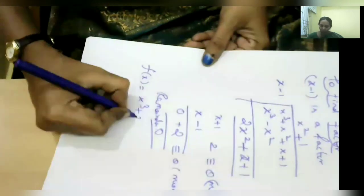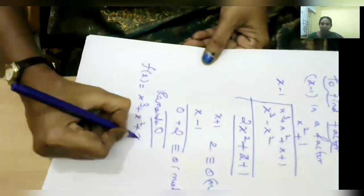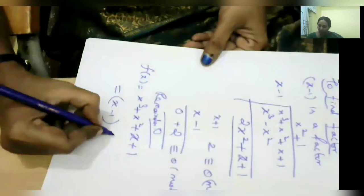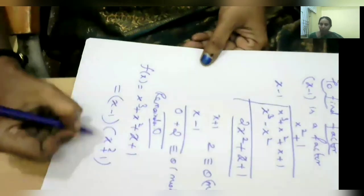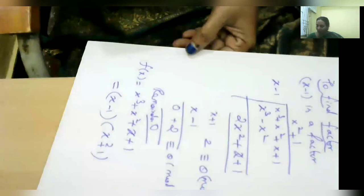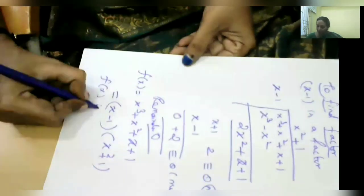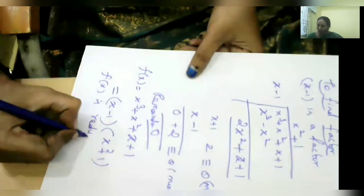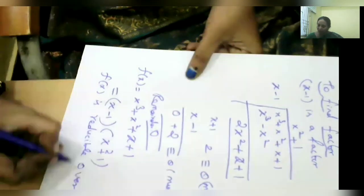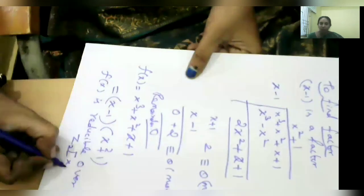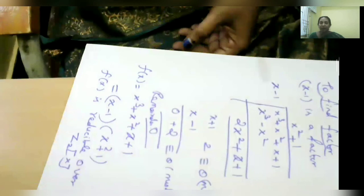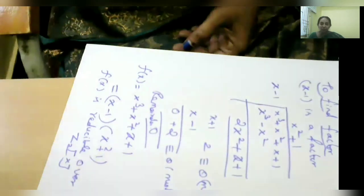Therefore our polynomial f(x) = x³ + x² + x + 1 can be written as (x − 1)·(x² + 1). Therefore f(x) is reducible over the field Z₂[x].